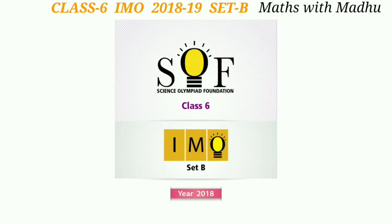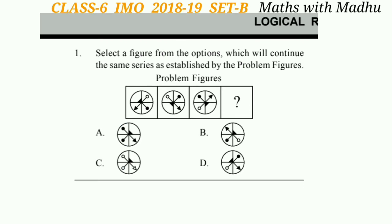Hello everyone, welcome back to my channel. Today we are going to solve the 2018-19 IMO paper set B for Classics. Before that, a request: please subscribe to my channel and hit the bell icon to get all the latest notifications. Let's start with the logical reasoning portion.